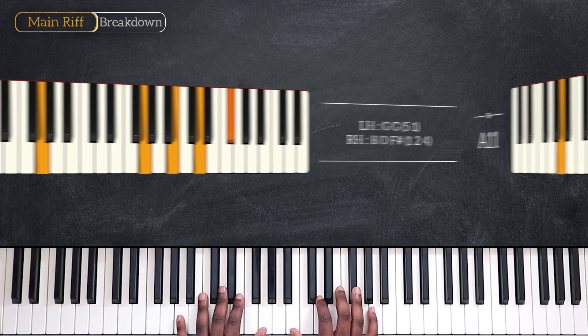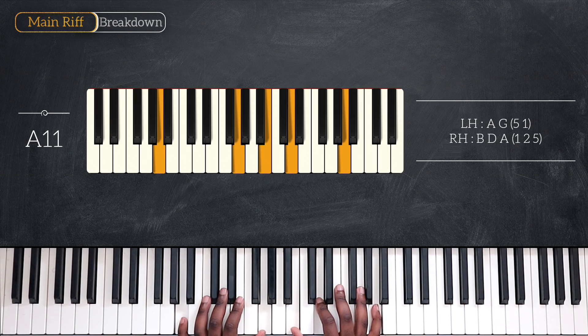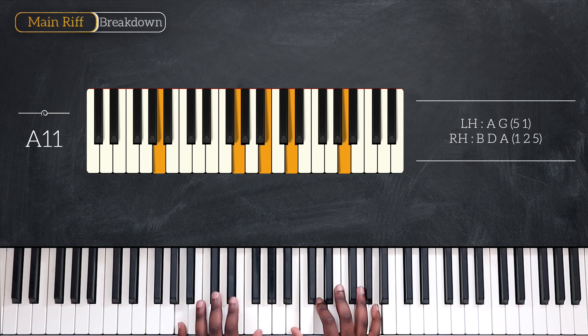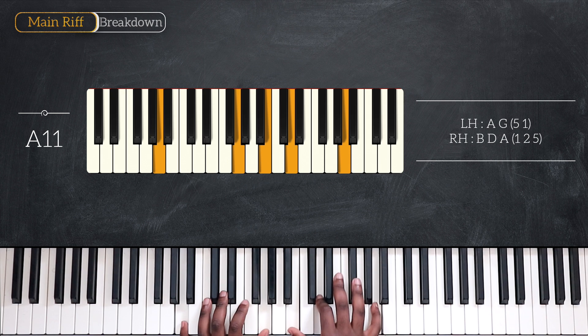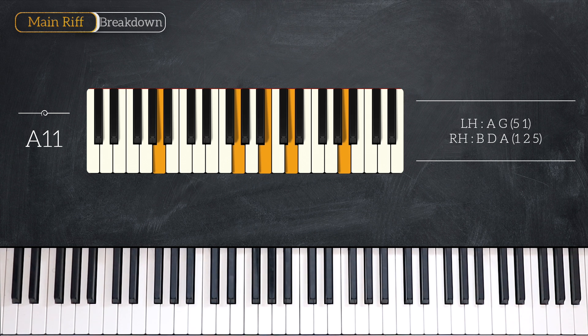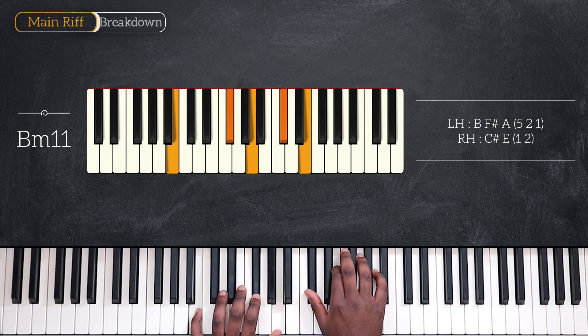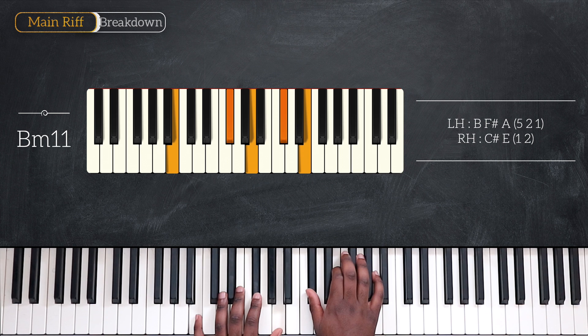Then we have A11: A and G on your left, B, D, and A for the right. Still going up, after that we have B minor 11: B, F sharp, and A, and two notes for the right, C sharp and E.